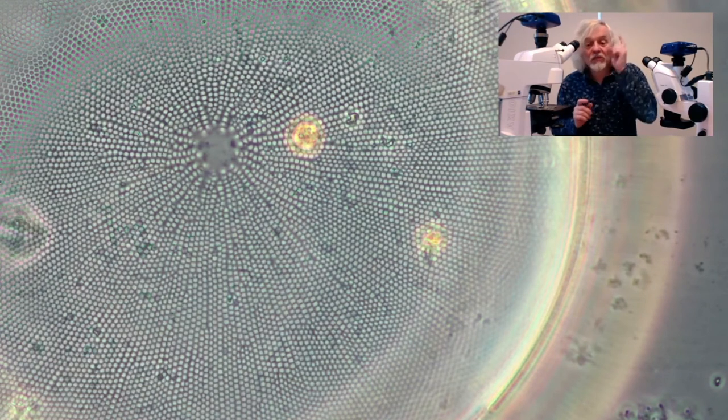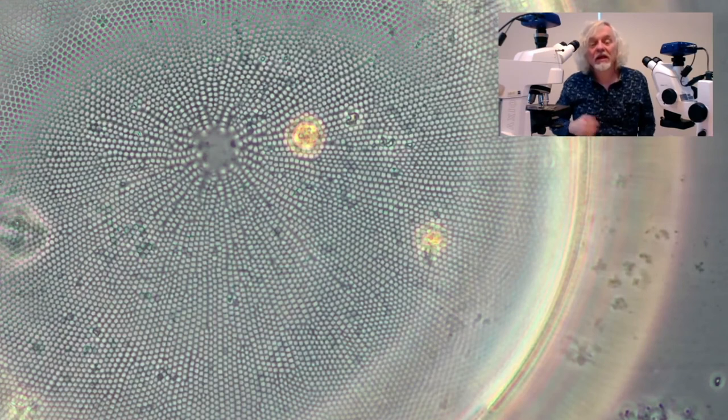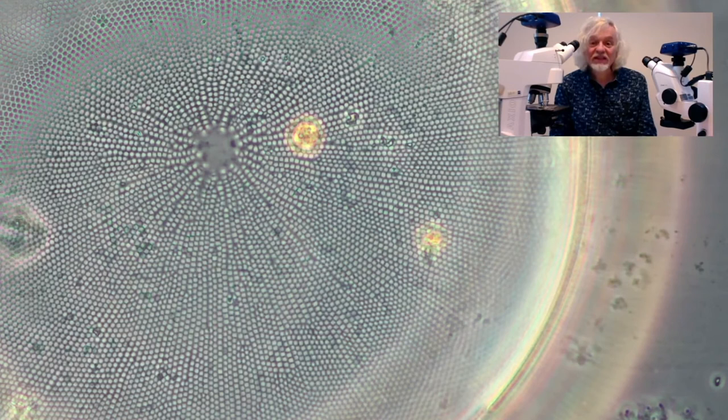Look at this under a scanning electron microscope, which I have done. There's the link. You can see even more detail and that's it. That is Coscinodiscus, a diatom and type of plankton.